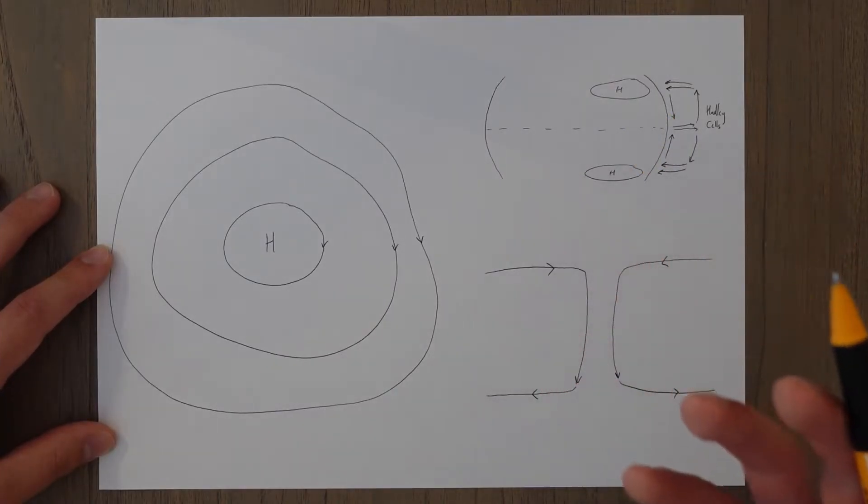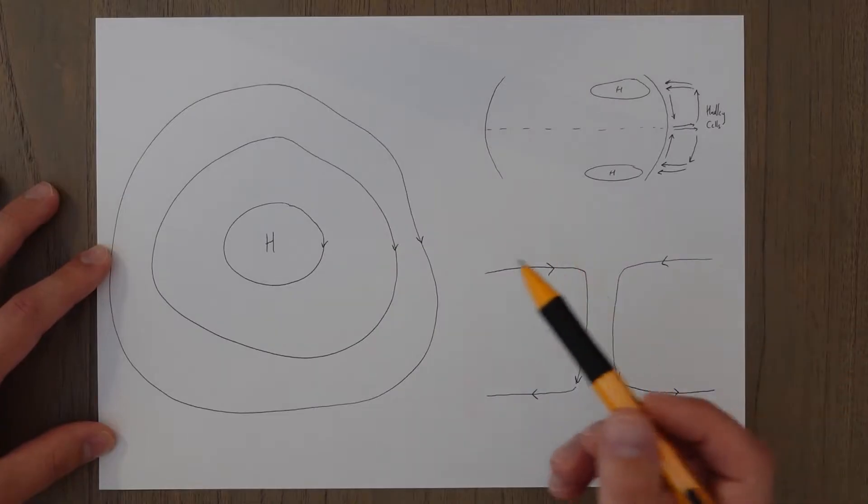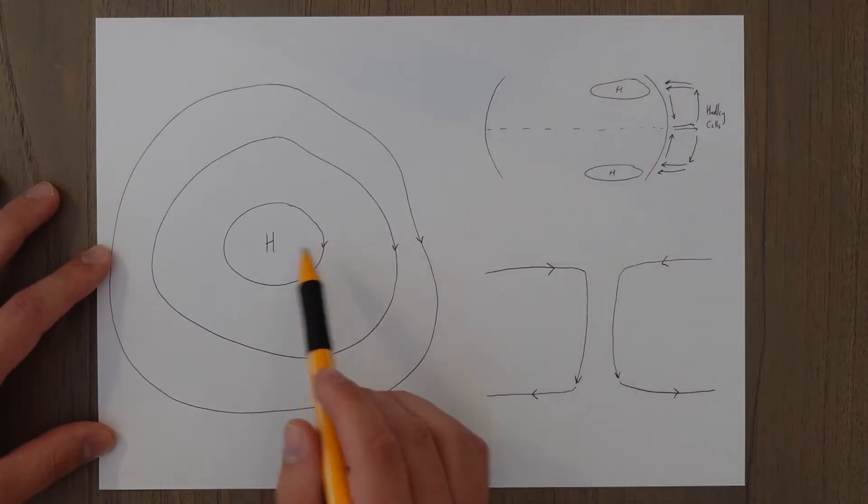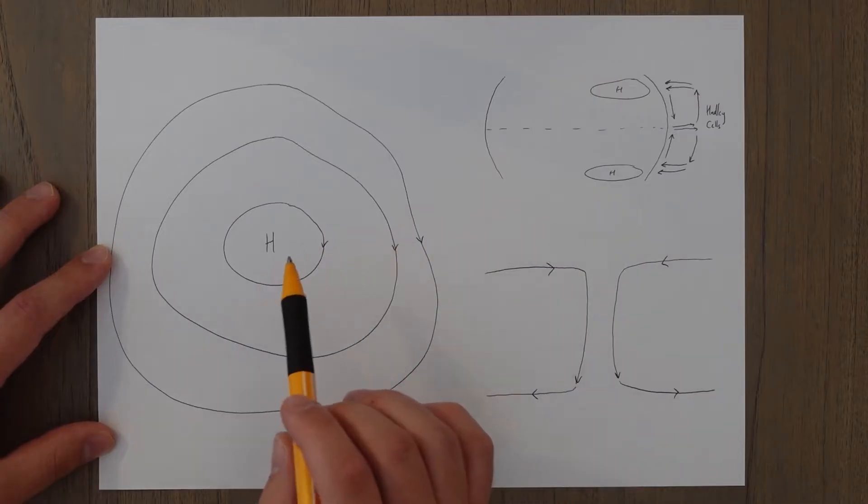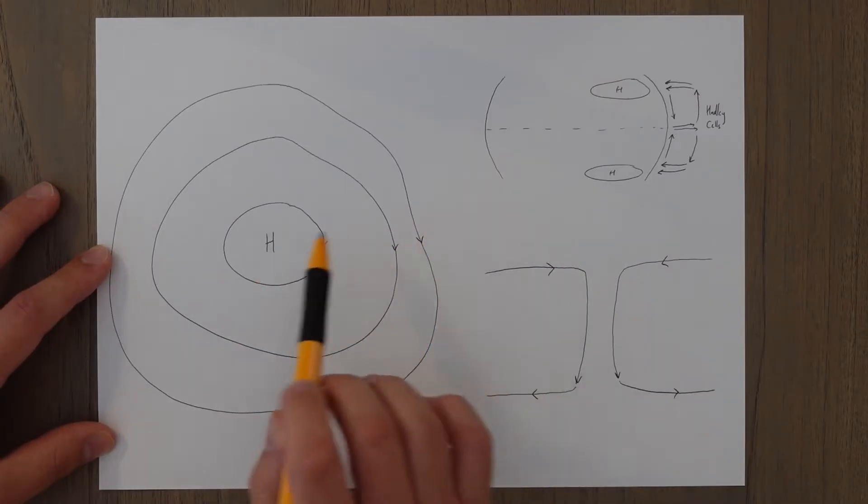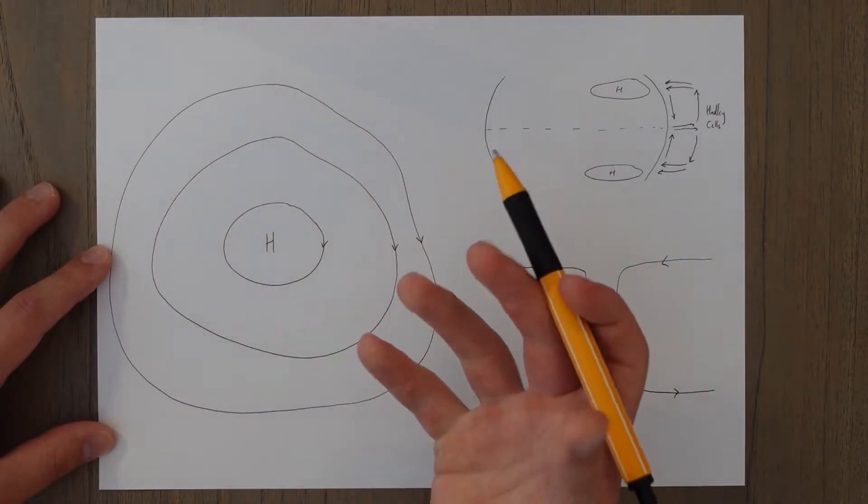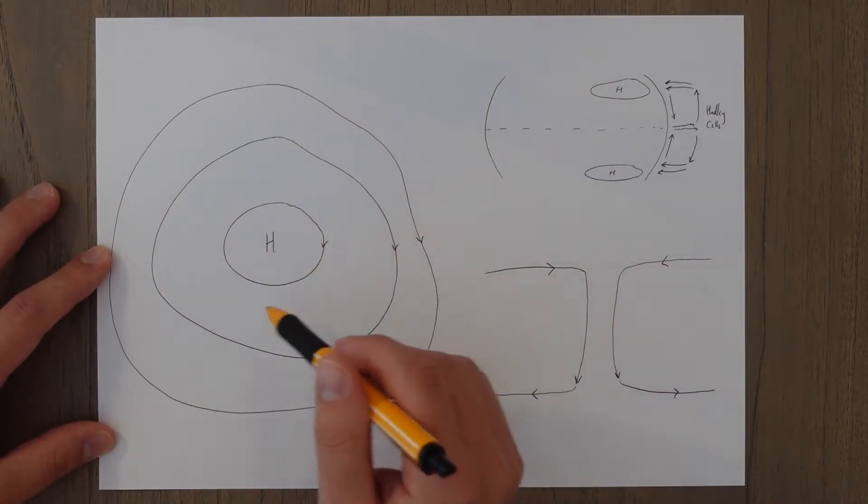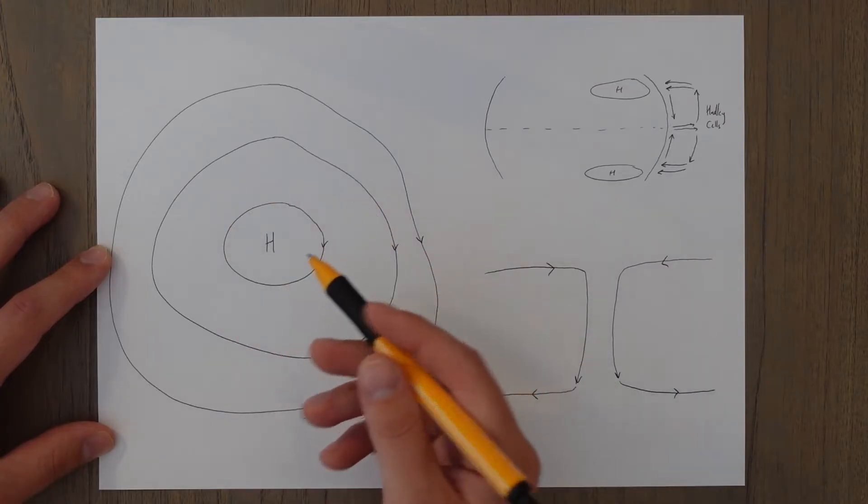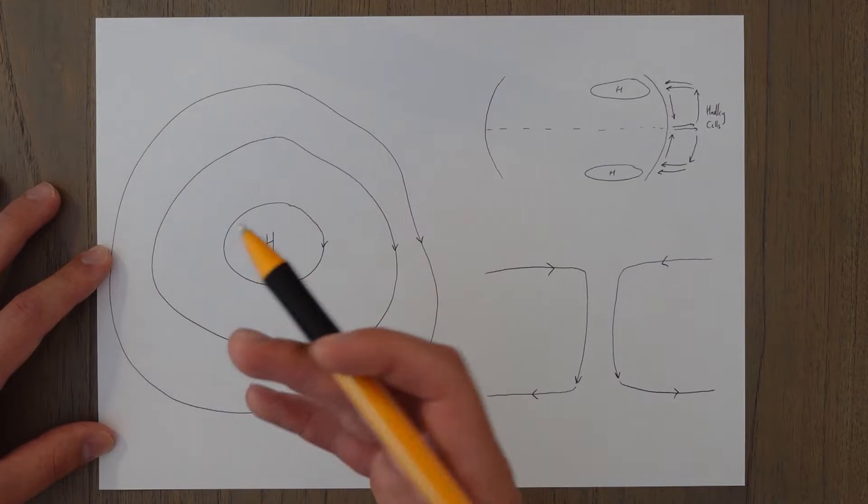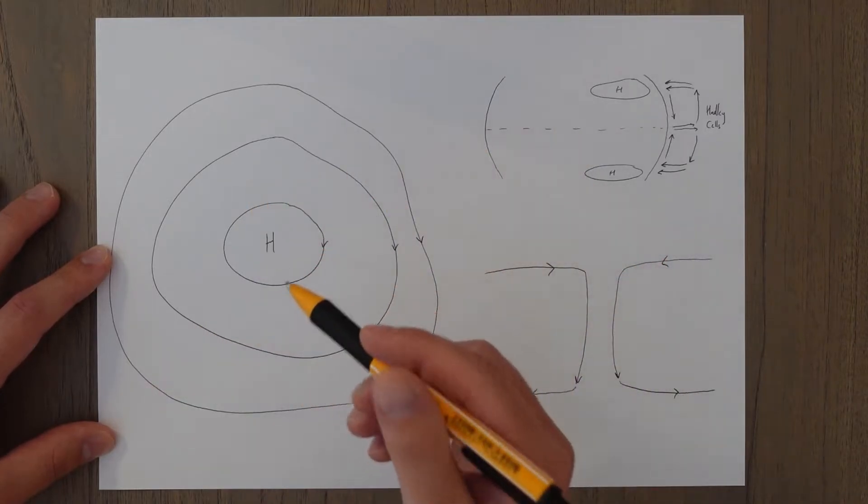So what does an anti-cyclone actually do though? Well, first of all, the wind, as we said, will most likely to be light, because of the far apart isobars. And it will flow from high to low, and then get pulled round to the right by the Coriolis force in the Northern Hemisphere. So wind flows clockwise around an anti-cyclone, which is a bit confusing. Anti-cyclone you'd expect to be anti-clockwise, but no, anti-cyclone is clockwise.